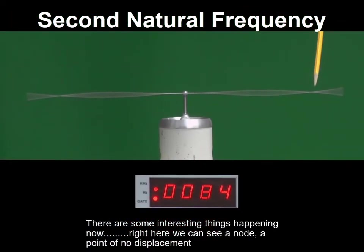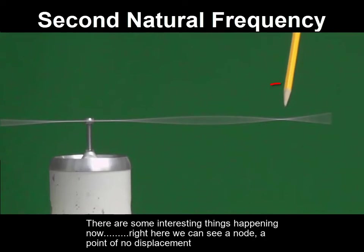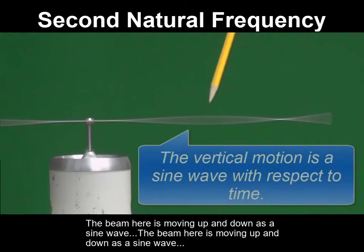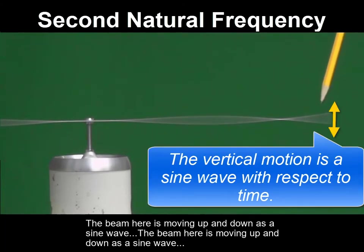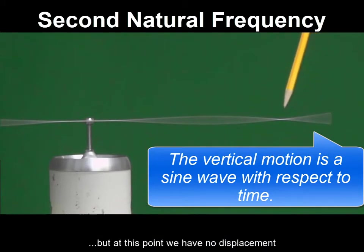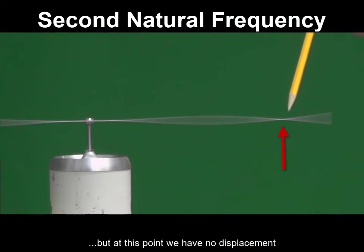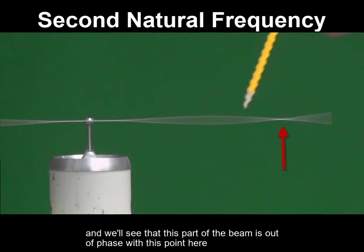There are some interesting things happening now. Here we can see a node, a point of no displacement. The beam here is moving up and down as a sine wave. The beam here is moving up and down as a sine wave. But at this point, we have no displacement.